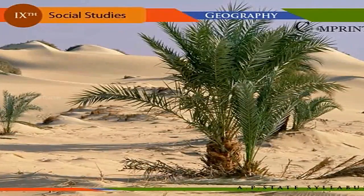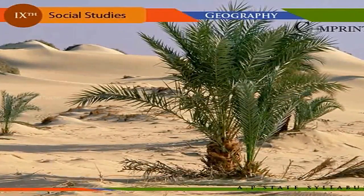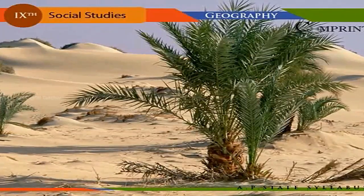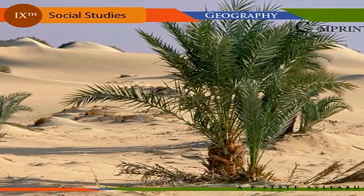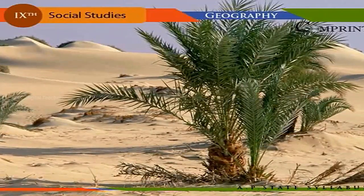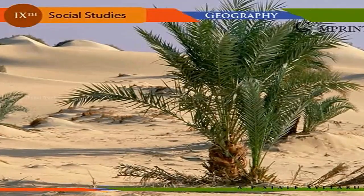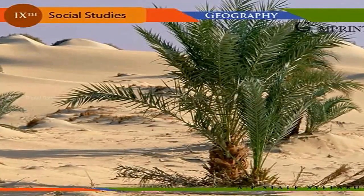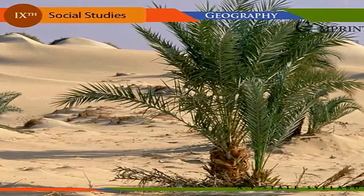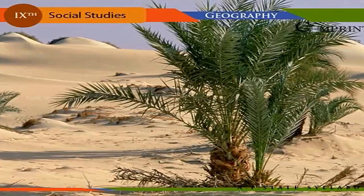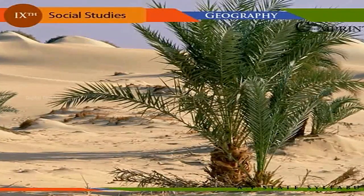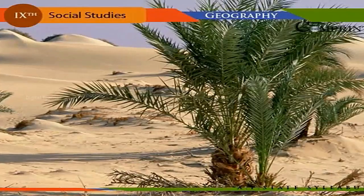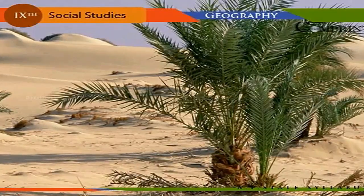Desert vegetation consists of xerophytes, which are well adapted to the prevailing harsh climates. Animal life in these deserts is very much limited in number and well adapted to the environment. Most of the desert dwellers are either farmers or pastoral nomads, depending upon the quantity of water available.